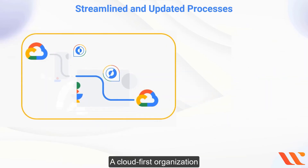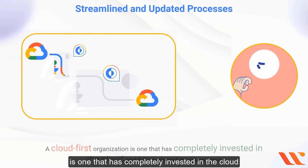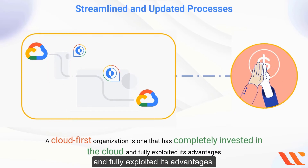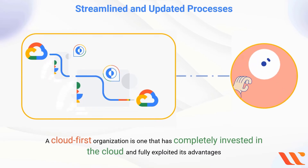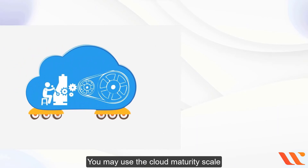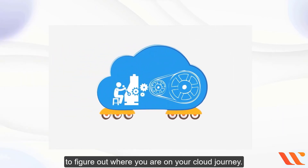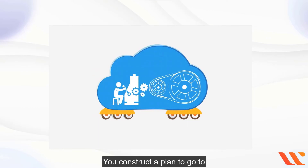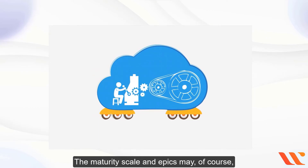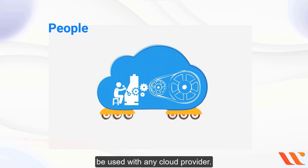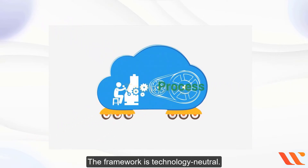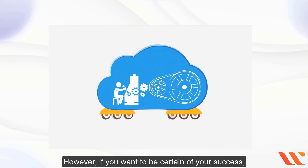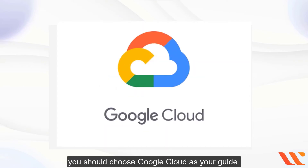A cloud-first organization is one that has completely invested in the cloud and fully exploited its advantages. You may use the cloud maturity scale to figure out where you are on your cloud journey and construct a plan to reach your goals. The maturity scale and epics can be used with any cloud provider — the framework is technology-neutral — however, if you want to be certain of your success, you should choose Google Cloud as your guide.